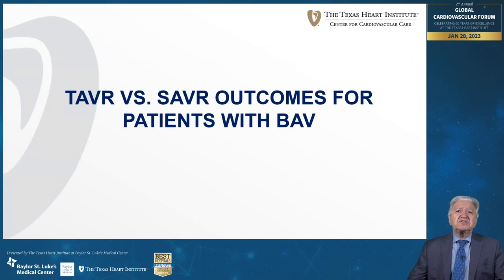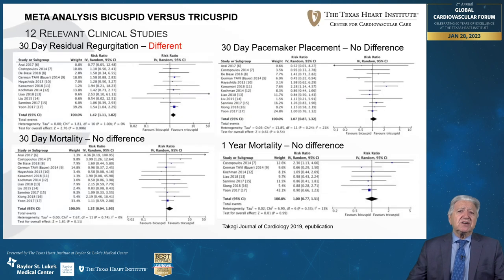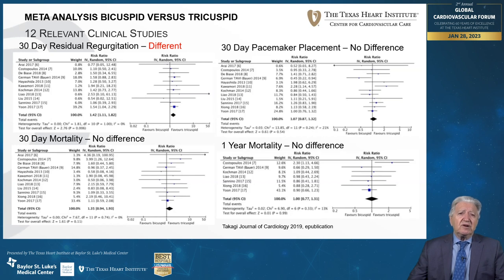Regarding TAVR versus SAVR outcomes in patients with bicuspid aortic valve, this meta-analysis examined several aspects comparing surgery versus TAVR. At 30-day incidence of permanent pacemaker, 30-day mortality, or one-year mortality, there was no difference between surgery and TAVR. However, there was a significant difference in 30-day residual aortic regurgitation, which was higher in patients treated with TAVR for bicuspid aortic stenosis.